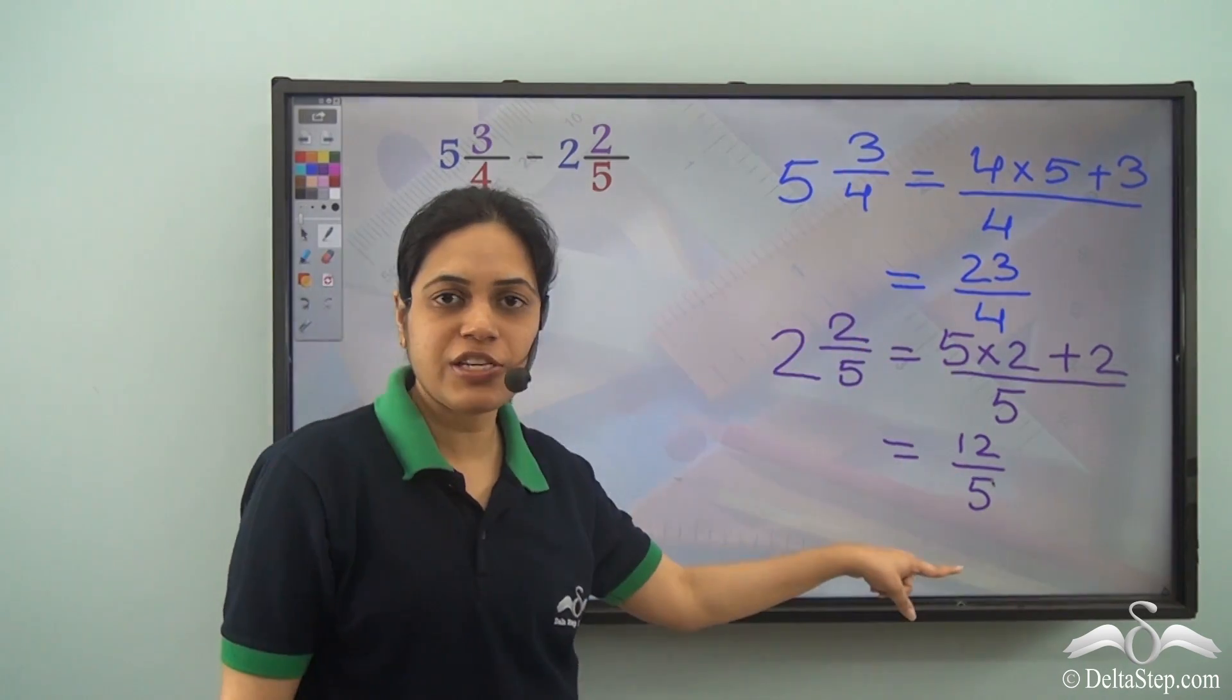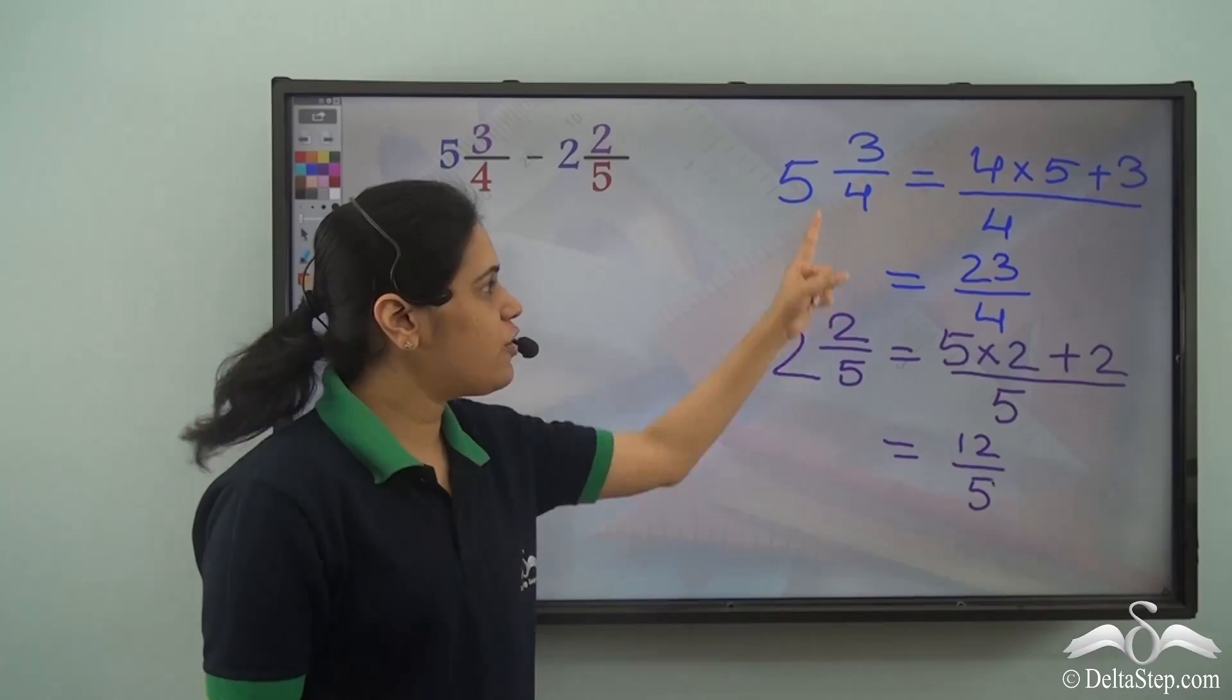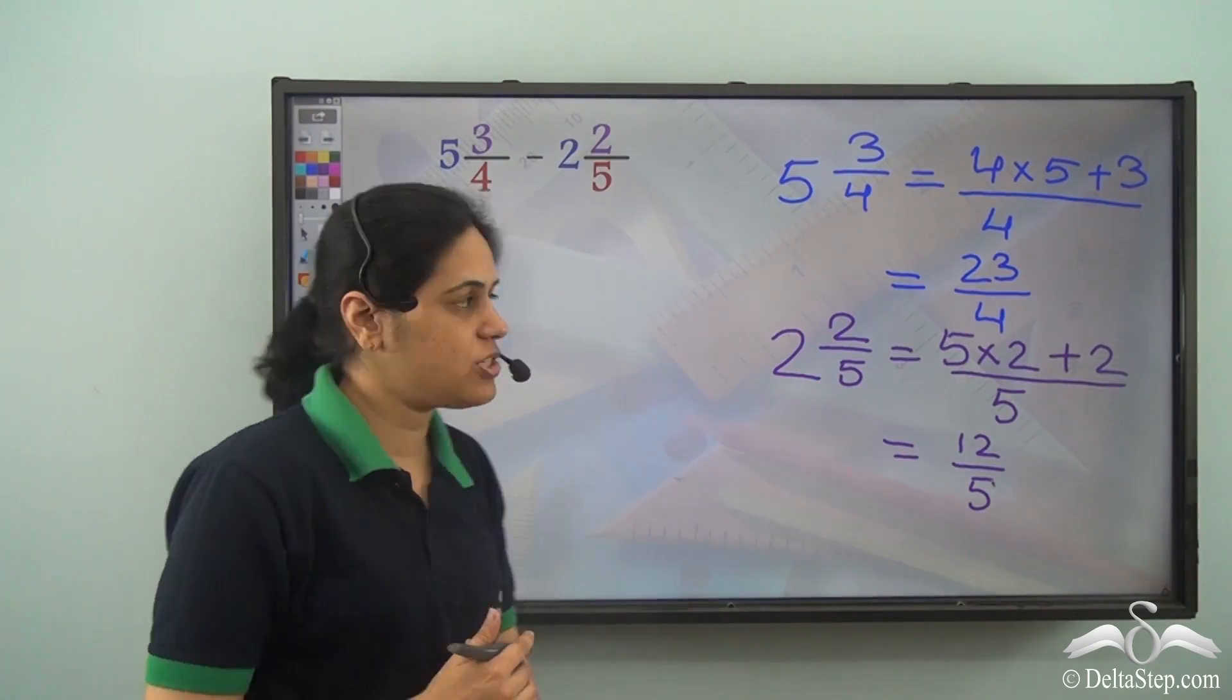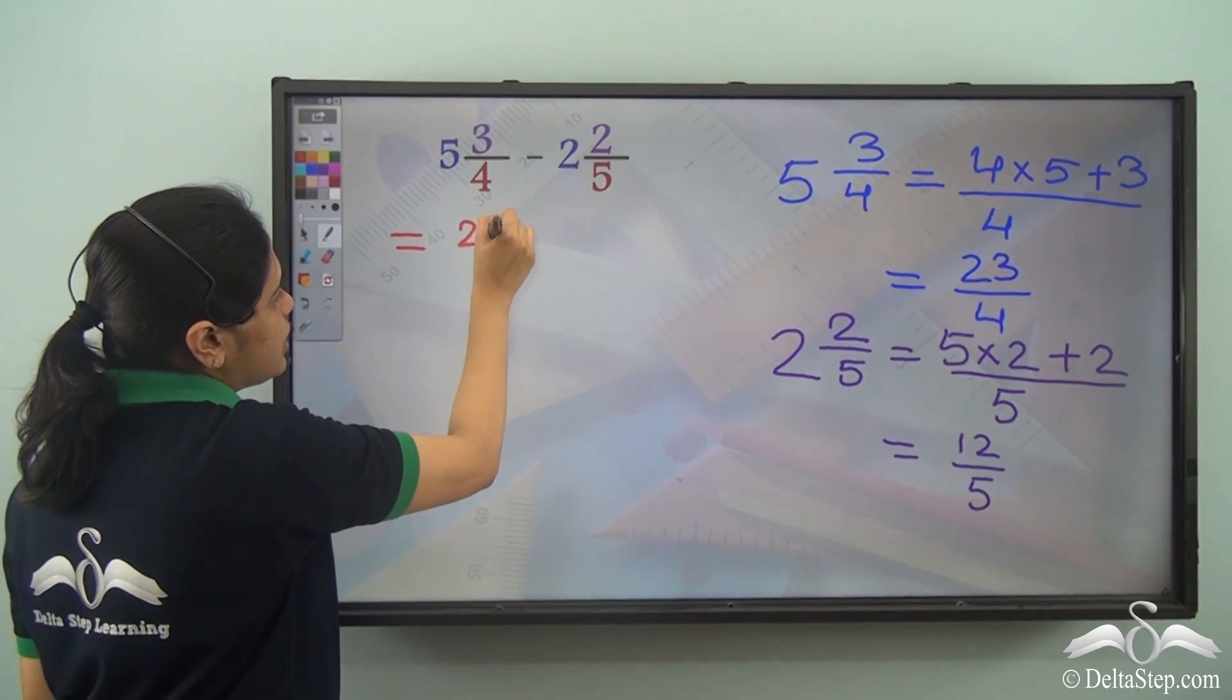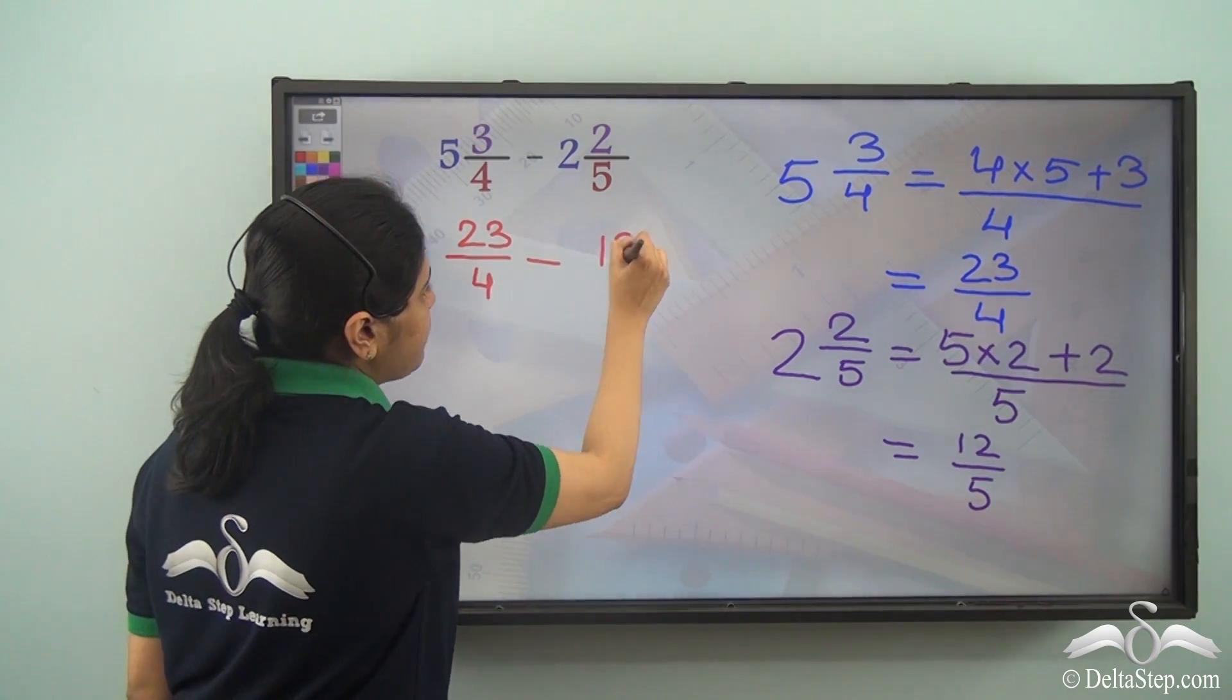Now I have two improper fractions which are equal to these two mixed fractions. So instead of adding these two mixed fractions, I can add these two improper fractions. So this is equal to 23 by 4 minus 12 by 5.